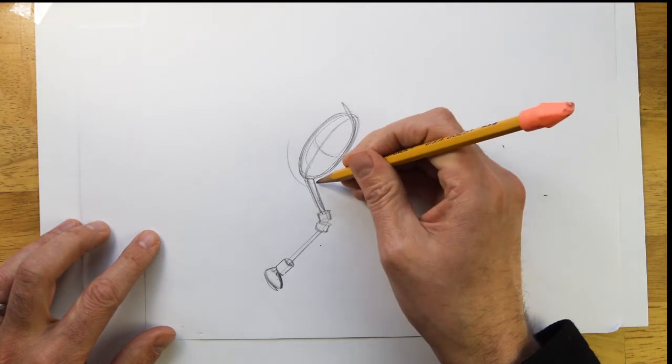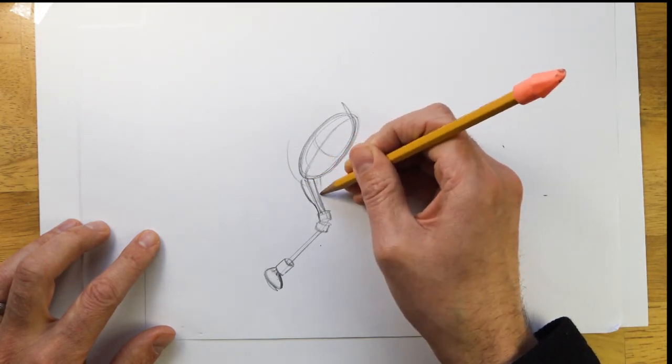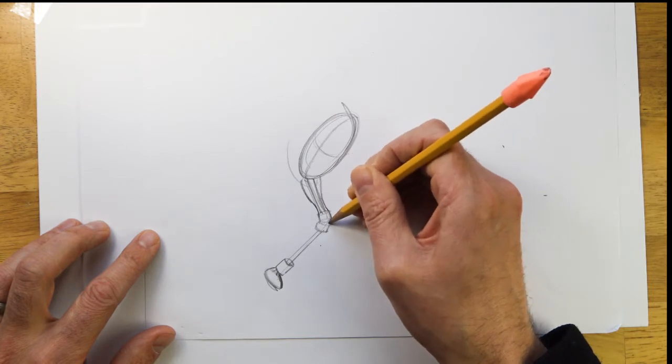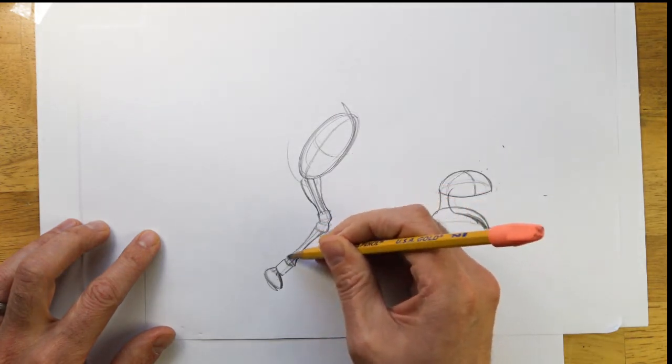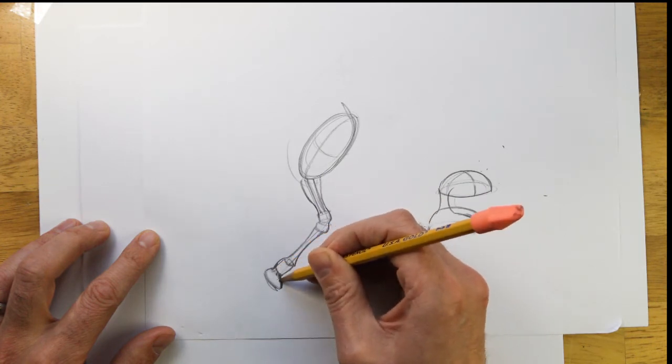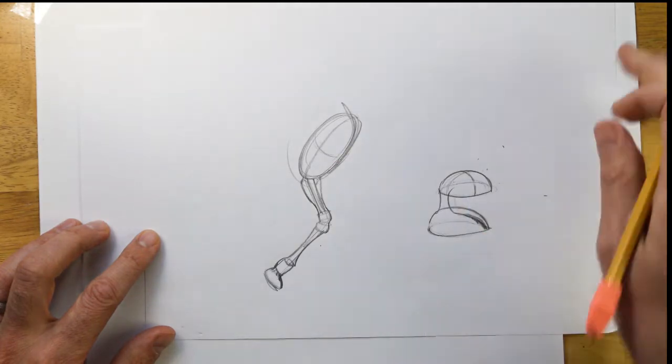And then we're going to add a little more meat to this part. We're gonna round off, use those curved lines. Now it looks a little more organic, less like a robot.